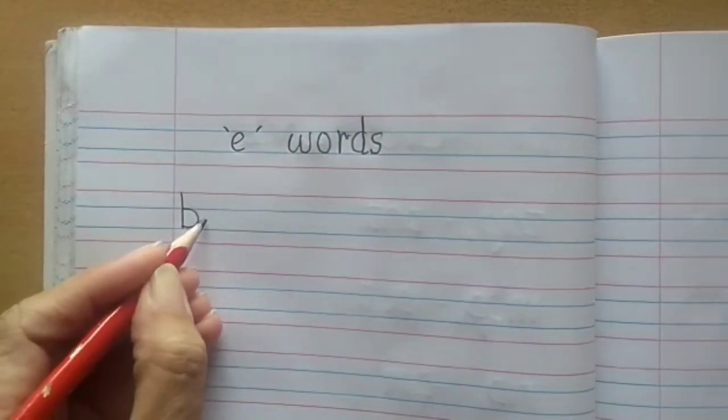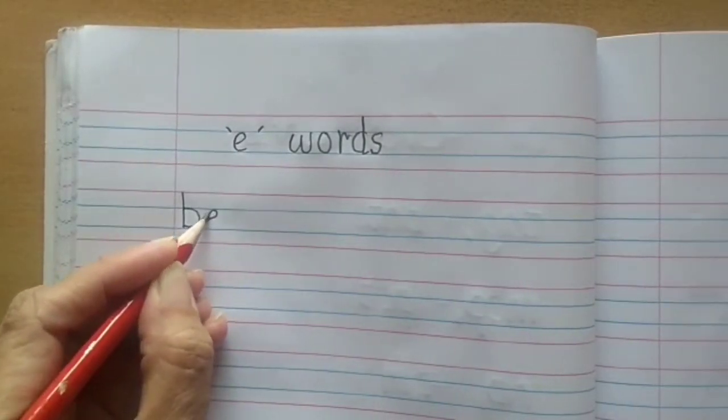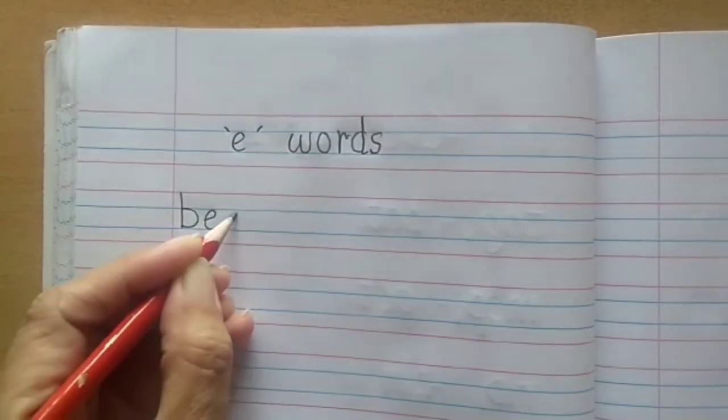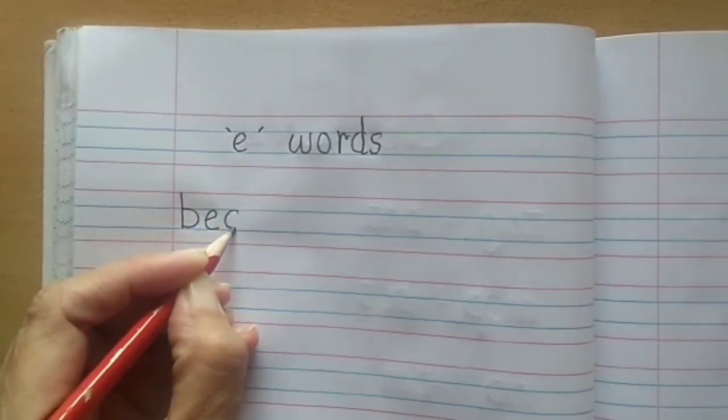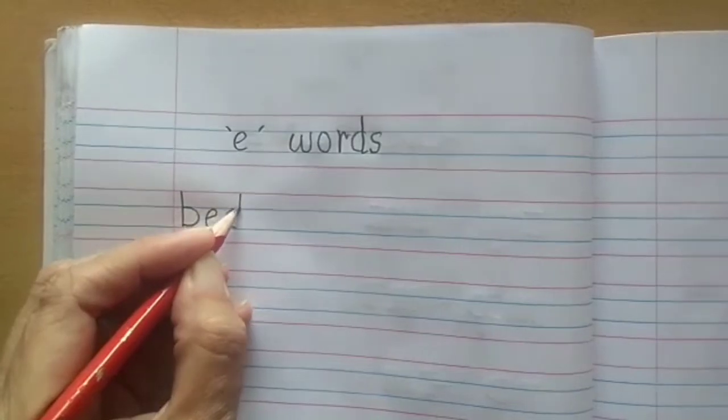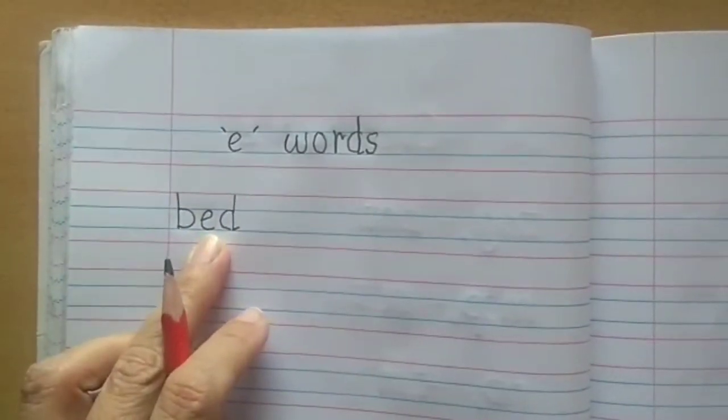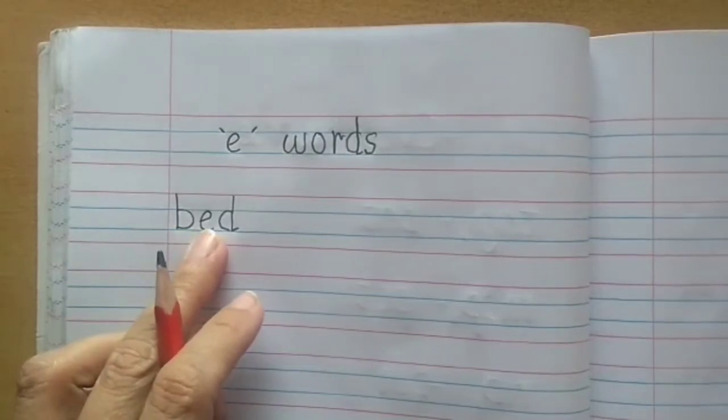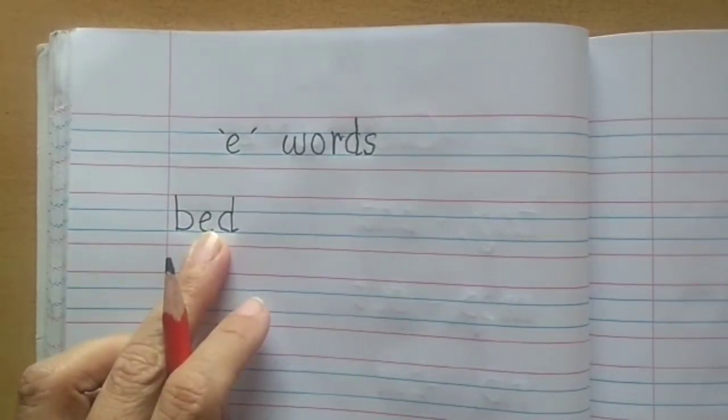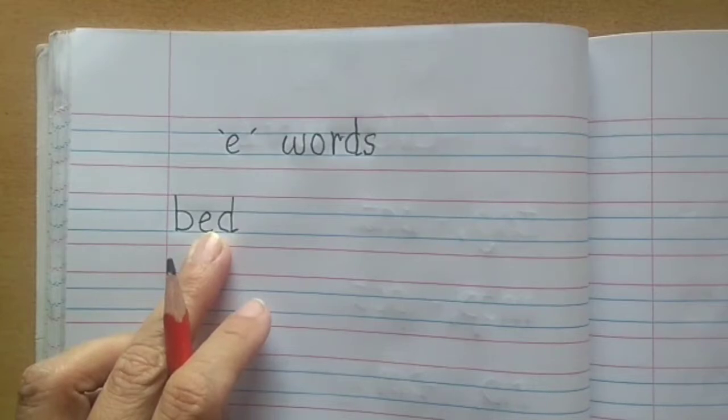Next to the margin in the next line we will write B-E-D. Bed. Children, you need to say the words the way I am saying while writing. After writing bed,